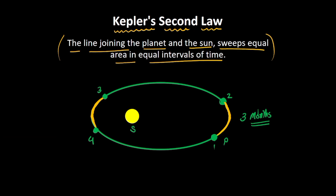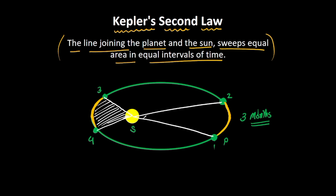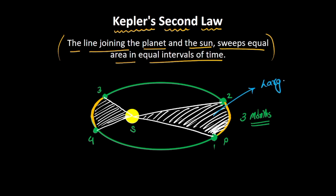Now let's try to apply Kepler's second law here. The line joining the planet and the sun sweeps equal area in equal interval of time. This is the area swept by the planet at the first position. But applying the same logic at the other position, this area seems much larger compared to the first, which seems much smaller.